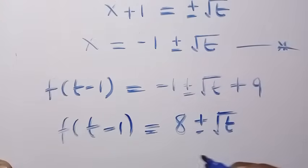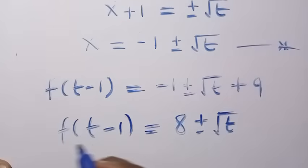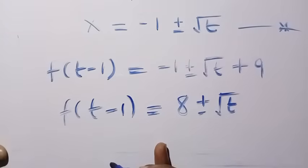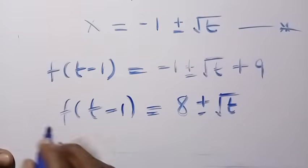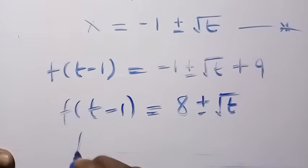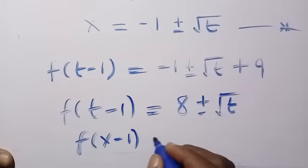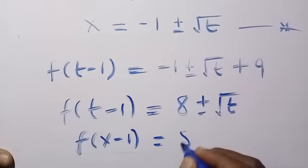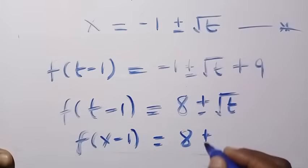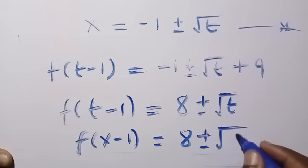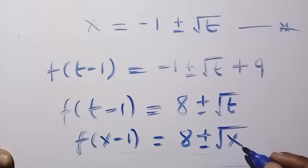Since we need to find f of x, and both x and t are members of the real numbers, we simply change t to x, giving us f of x minus 1 equals 8 plus or minus the square root of x.